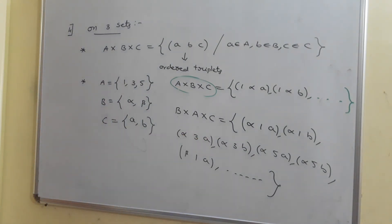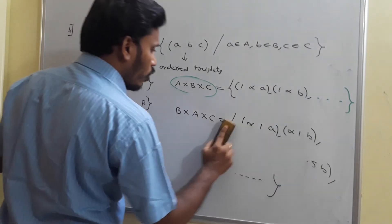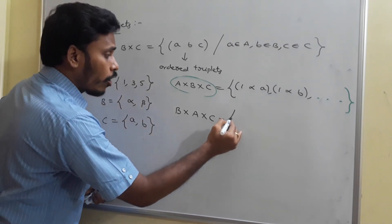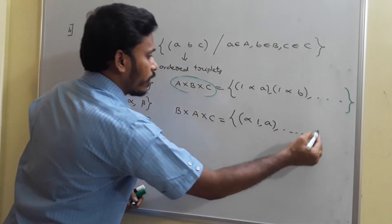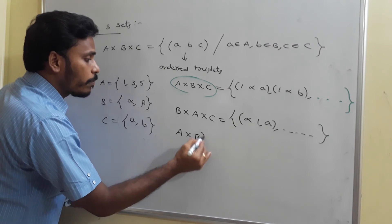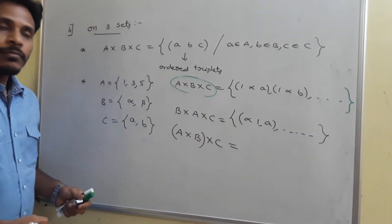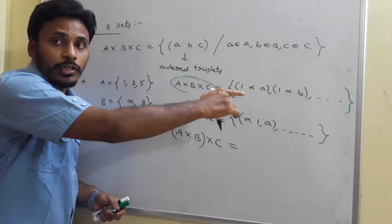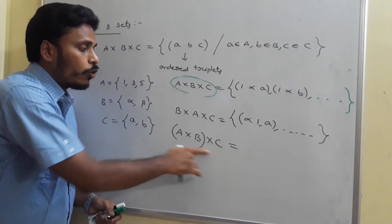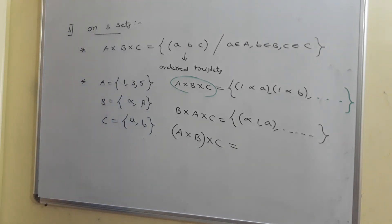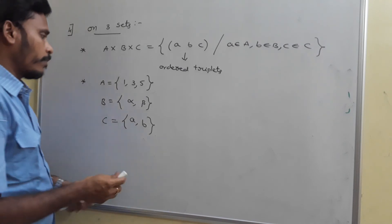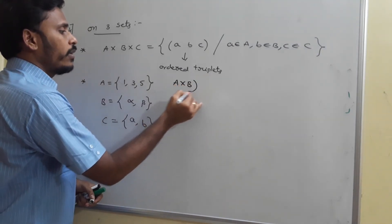There is an important distinction: A cross B cross C is different from (A cross B) cross C. In (A cross B) cross C, you first compute A cross B, then take the Cartesian product of that result with C.